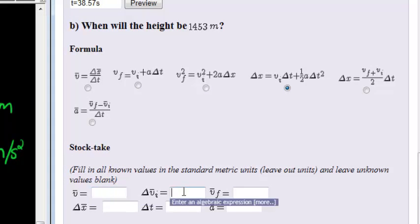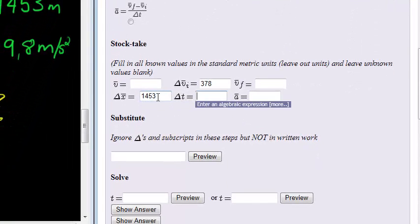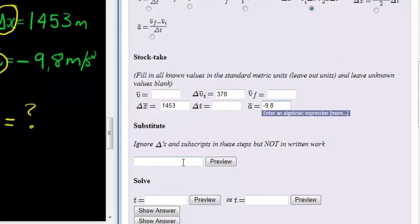Fill in all the values. We don't know average velocity. We know initial velocity is 378. Future velocity is not zero. That would be zero if we're talking about the maximum height. We are not. We're talking about the height 1453 meters.